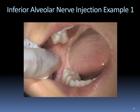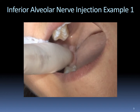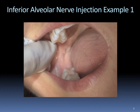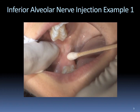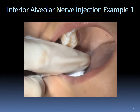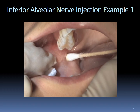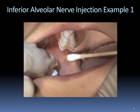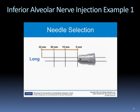Gently retract the cheek laterally. Palpate landmarks. Locate and palpate the internal and external oblique ridges, coronoid notch, and pterygomandibular raphe. Dry the tissue with a two-by-two prior to placing the topical. Place topical in the pterygomandibular triangle, which is the depression created by these landmarks. Use a 25 or 27 gauge long needle.